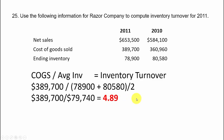To make this meaningful, we'd compare our inventory turnover of 4.89 to past years — hopefully it's higher than the past since higher is better — or compare it to the industry average to see if we're above or below.